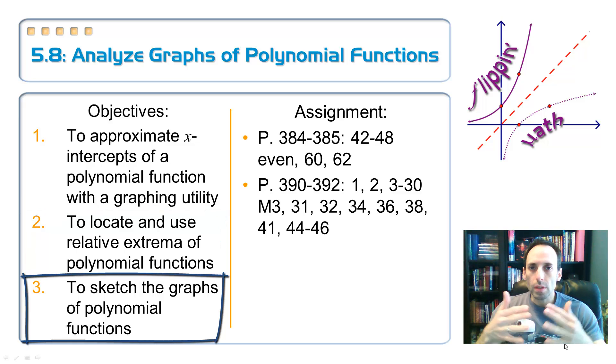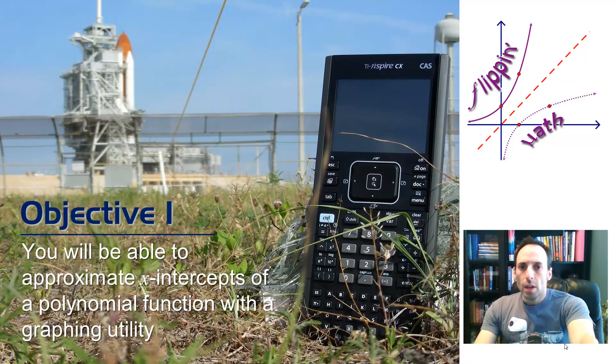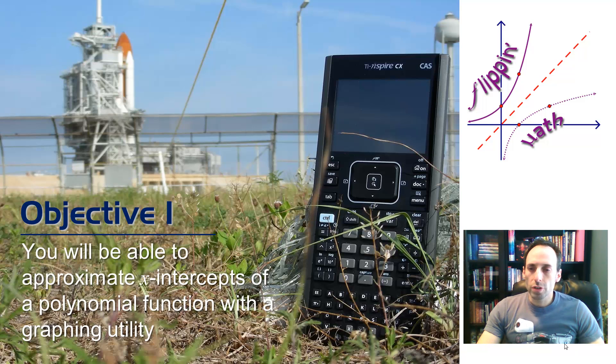And then finally, put these things together, and let's graph some polynomial functions. Notice it says sketch, and that's what we're going to do. We're not looking for perfect accuracy. We're just going to get the general look, x-intercepts, y-intercepts, and end-behavior for those graphs. All right, so first objective, using the graphing calculator in order to find the x-intercepts of our polynomial function.